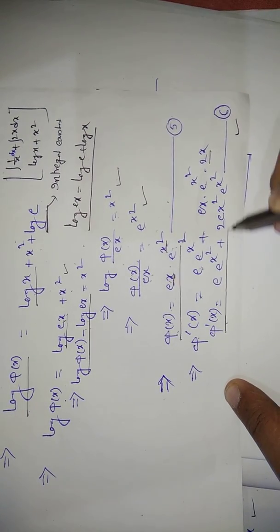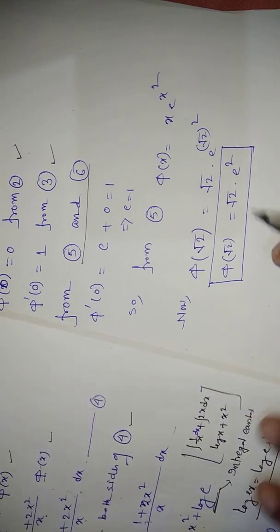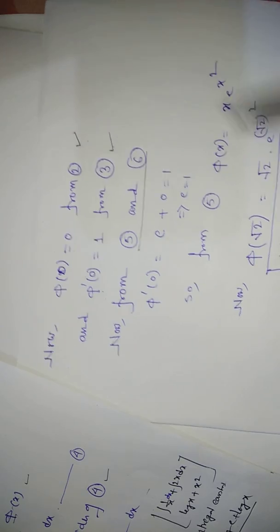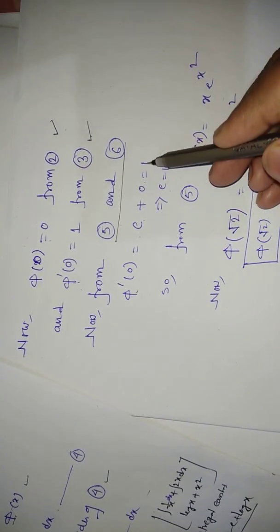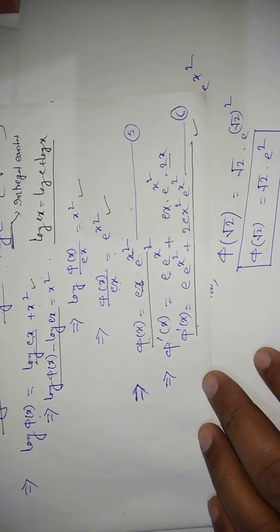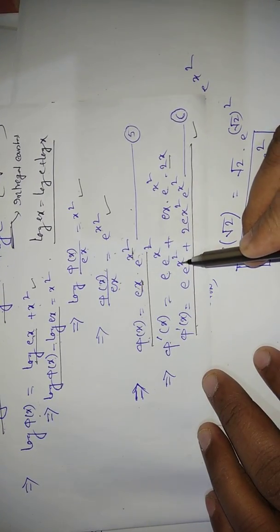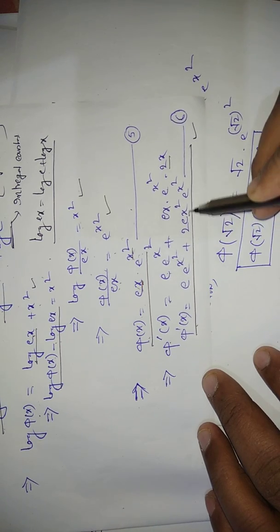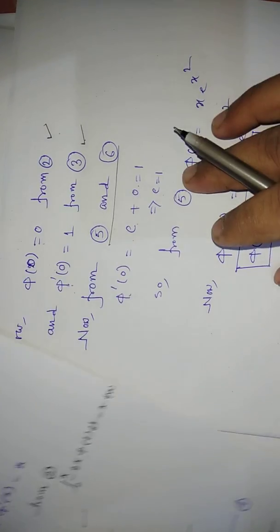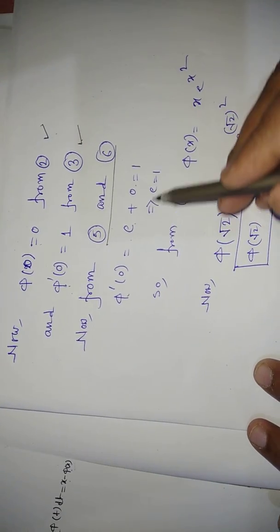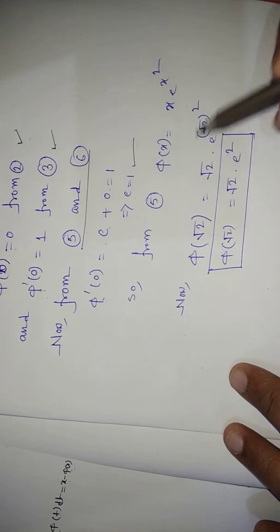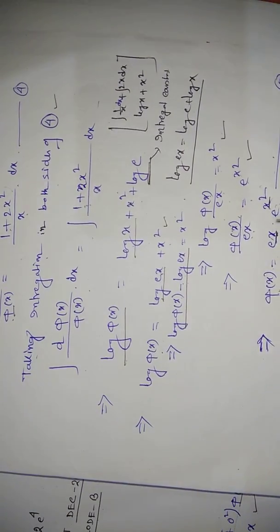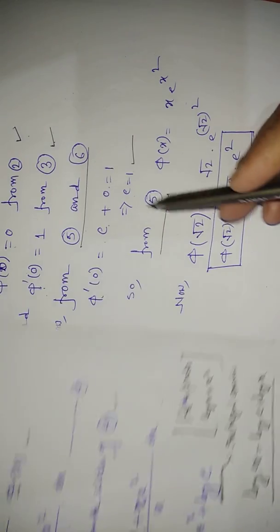Using φ'(0) = 1 in equation (6): φ'(0) = c·e^0·(1 + 0) = c·1 = c = 1. So c = 1. Substituting c = 1 into equation (5): φ(x) = x·e^(x²).